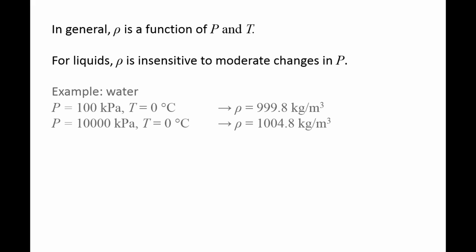In general, the density of a fluid is a function of both pressure and temperature. For liquids, density is insensitive to moderate changes in pressure. For example, the density of water at 100 kPa and 0 degrees Celsius is 999.8 kg per cubic meter.